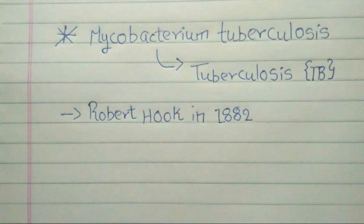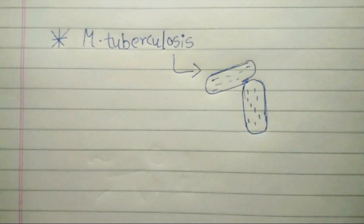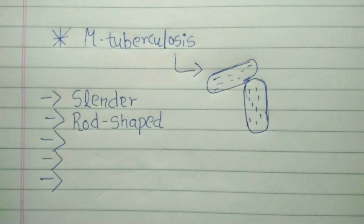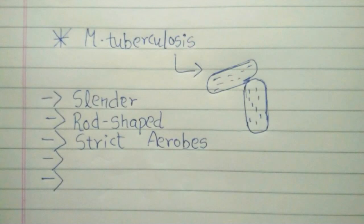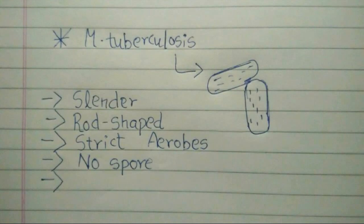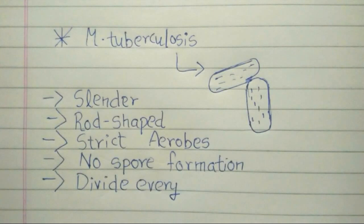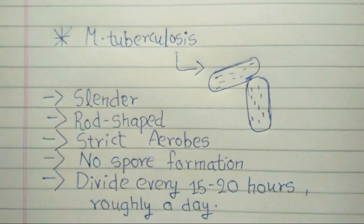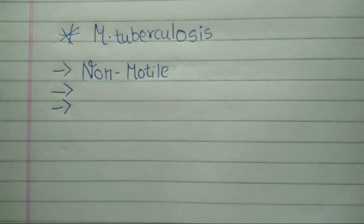Mycobacterium tuberculosis was first discovered by Robert Koch in 1882, which brought him the Nobel Prize. They are slender, rod-shaped organisms and are strict aerobes, meaning they require high levels of oxygen to live, thus primarily making them pathogens of the respiratory system. They don't produce spores for reproduction and divide every 15-20 hours. This is extremely slow compared to other bacteria, which tend to have division times in minutes. They are non-motile and tend to live in colonies.